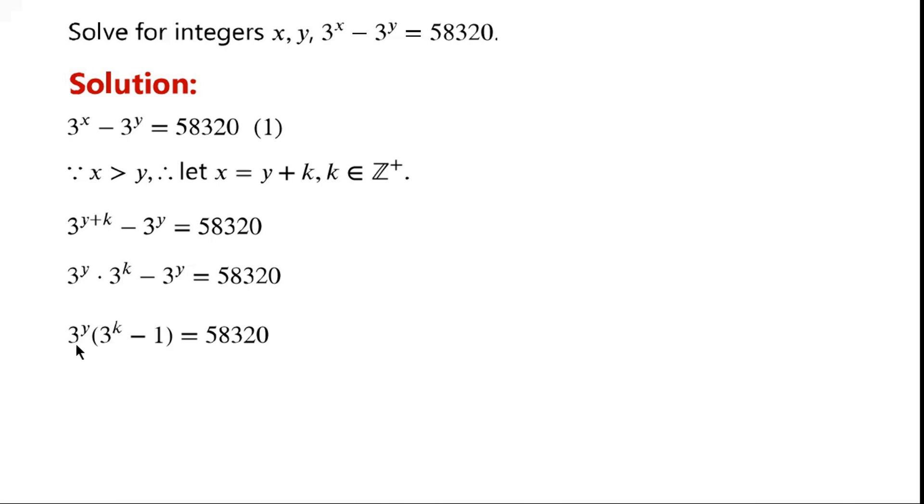So we can factorize the left hand side of the equation, and we can now write 3 to the power of y times 3 to the power of k minus 1 equals 58,320.